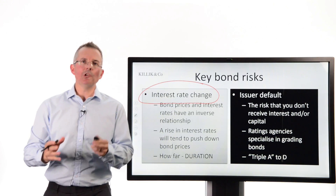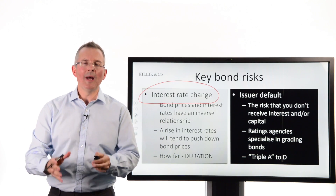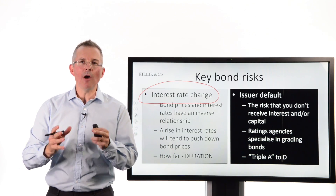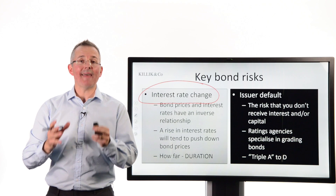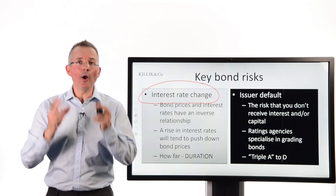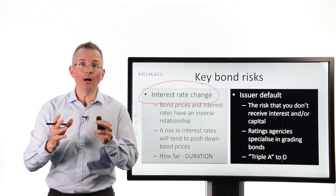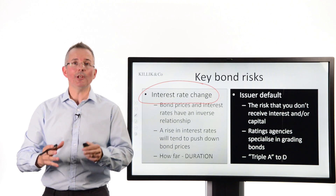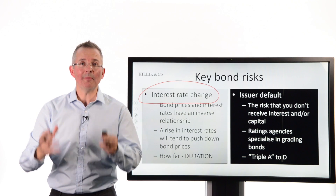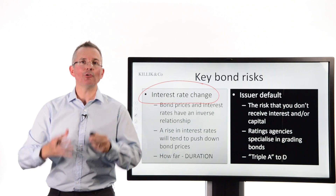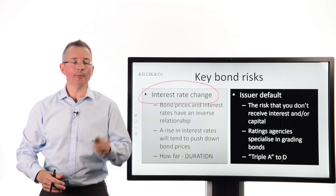Duration math is pretty horrible, and to be honest I wouldn't expect most people to ever want to get their heads around it. But the question is, if you're quoted the number, what does it mean? That's what we're getting to in this video. What does it mean, what does it tell you, and how should you judge it?